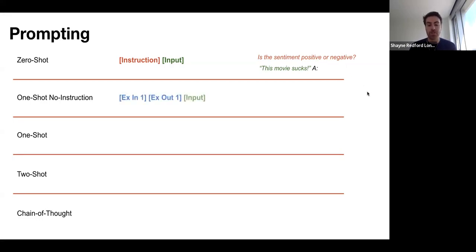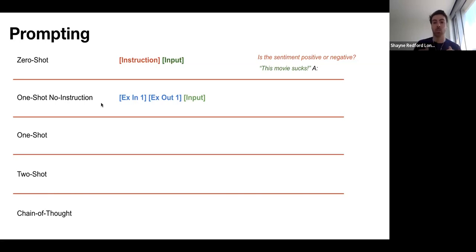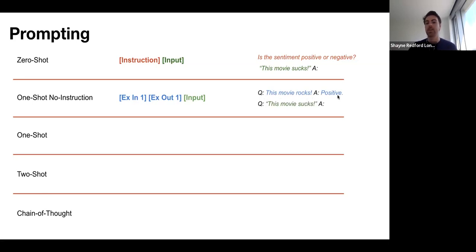In a one-shot setting — giving the model one example — there are many ways to do this. In one approach, we show an example with no instruction, so the model has to infer the pattern just from the one example. Here we have question: 'This movie rocks,' answer: 'positive' — we give it that. Then we ask the model a new question: 'This movie sucks,' and ask for the answer. The model should be able to intuitively generate text that follows this pattern.